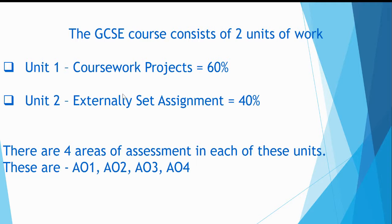This equates to 60% of their final grade. Unit 2 is the WJEC externally set exam project, which is started in January when students are presented with an examination paper. They have to choose a question and create a project from that question.